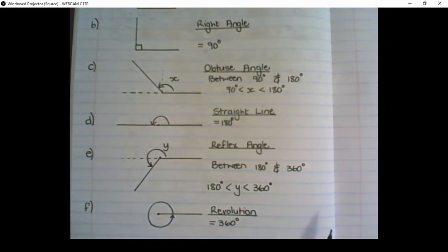The next angle size that we have is called a revolution. This is an angle that goes completely around and starts where it finishes. So it is complete 360 degrees. It forms a perfect circle.